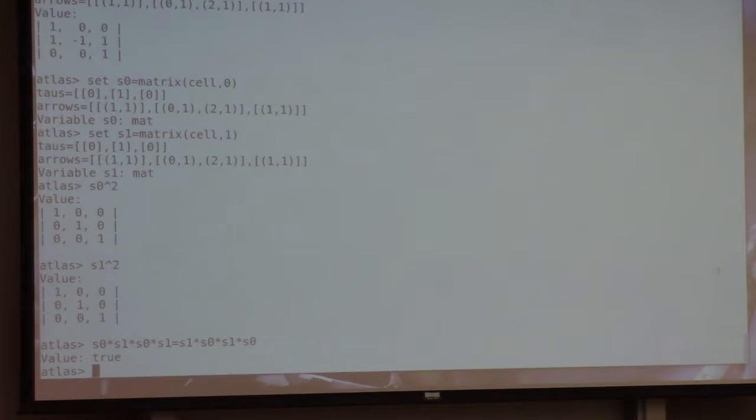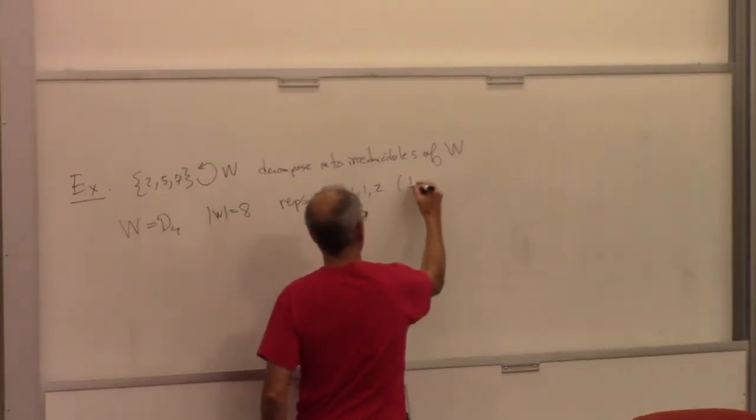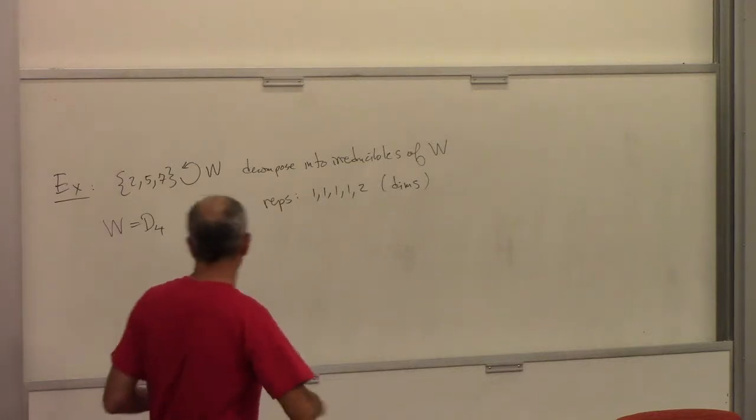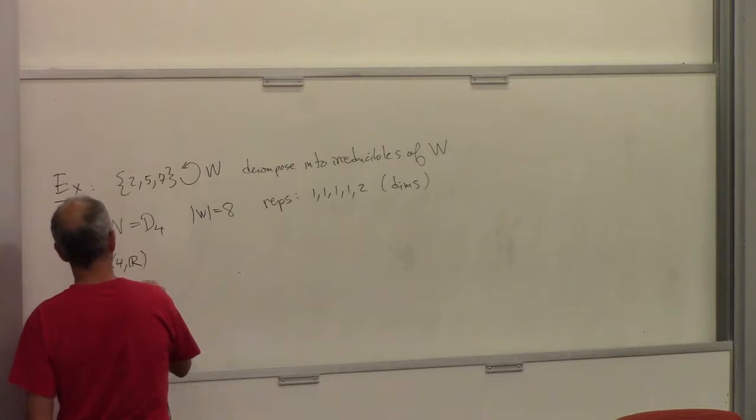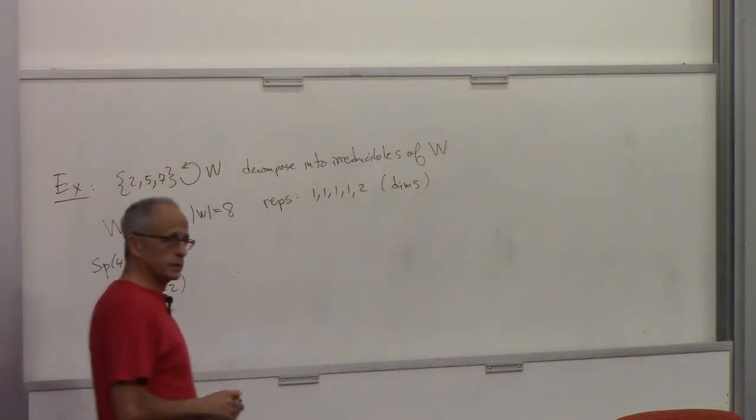And the exercise is... What's the cell 2 plus 7? Decompose into irreducibles of W. So remember, W is the dihedral group of order four, of order eight. And the representations are dimension 1, 1, 1, 1, 1, and 2 dimensions. So anyway, the information is all there. So the group is sp4. And so W is the Weyl group of type C2. All right. Questions before I turn it back over to Peter.